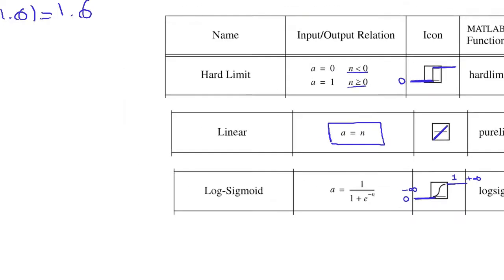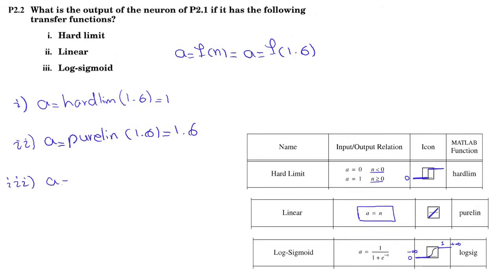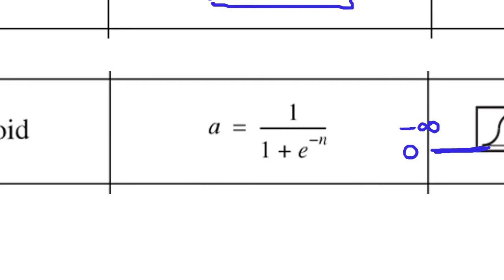So we have A equals log sigmoid of 1.6 equals, as it is, it's a continuous function. So we have a continuous value. So we should substitute N here.